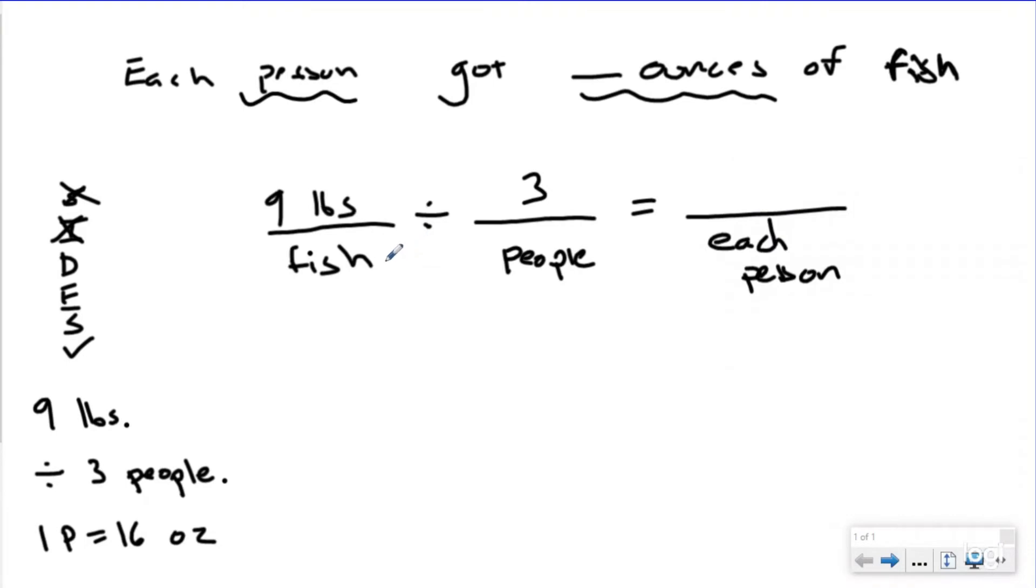Okay, so we want to do nine pounds divided by three people. That's awesome. We can go ahead and do that right now. That's a basic fact. Nine divided by three is going to be three pounds for each person. I'm going to go ahead and write it out because LBS gets confusing sometimes. It kind of looks like a 165. So we know each person got three pounds of fish.